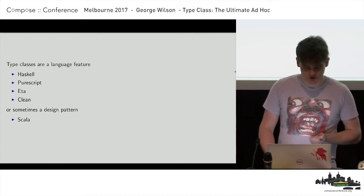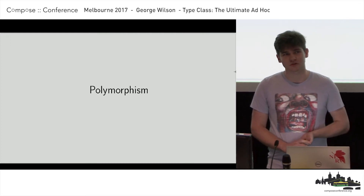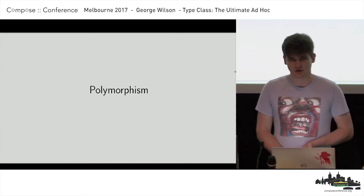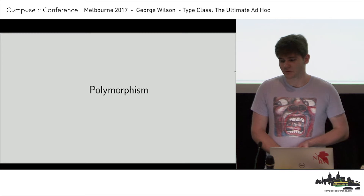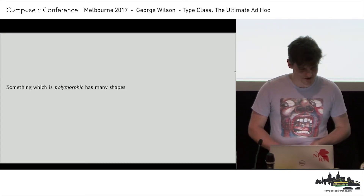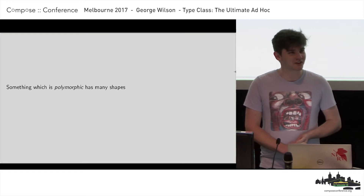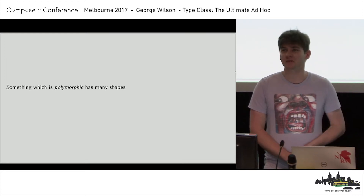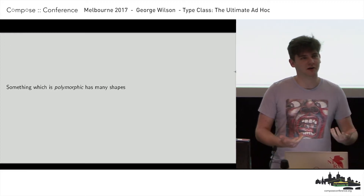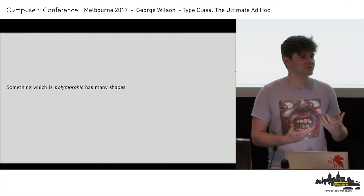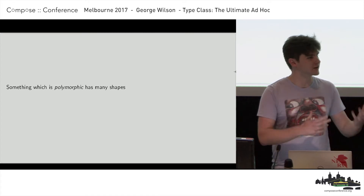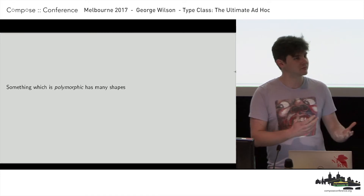Before I tell you what type classes are and why I think they're a really compelling solution to this problem, I'd like to describe what we're kind of doing with them. What we're doing is polymorphism. Something which is polymorphic has many shapes. When we use polymorphism to describe a type, what we're saying is that type can take on many forms — it can take the form of other types and it's in some sense abstract. It can behave at different types.